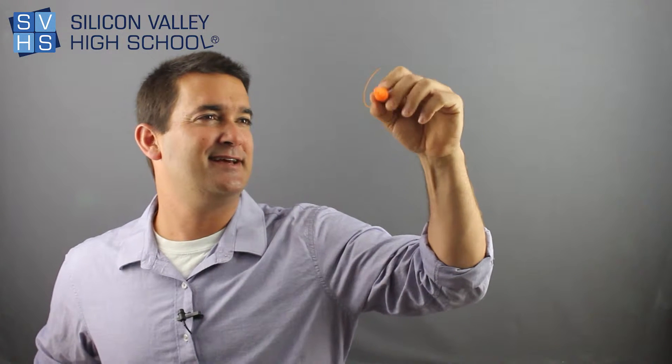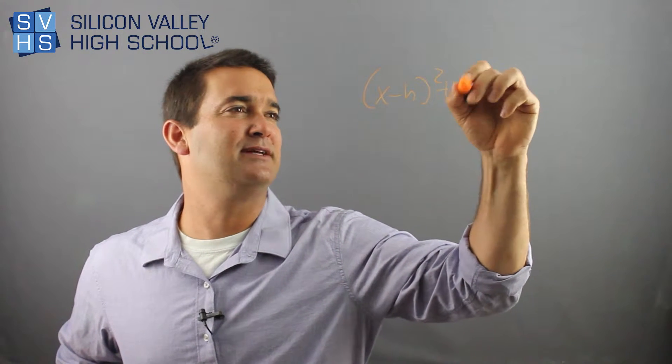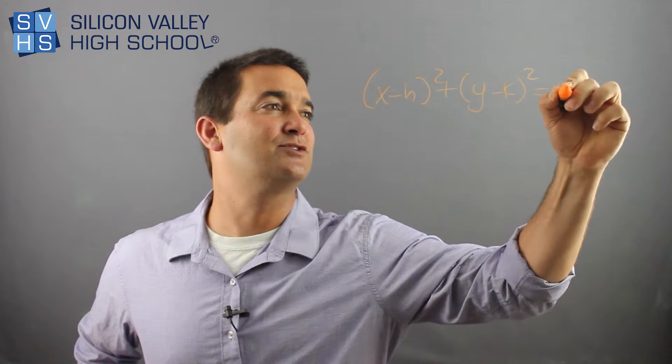So the equation of any circle is basically, this is the cool fancy formula for the equation of any circle. It's x minus h squared plus y minus k squared equals r squared.